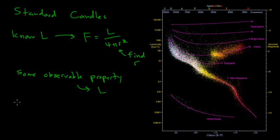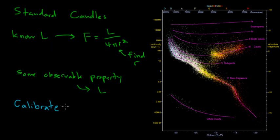Now, if I want to come up with a new set of standard candles — I have a bunch of objects that I believe are the same brightness — there are a number of things that I have to do before I can use it as a tool to measure distances. So the first thing that we have to do is actually calibrate how bright those objects are. I need to be able to say I can unambiguously and accurately measure the luminosity of all of these different objects. And most of the time, in order to do that, we're going to need quite a few nearby examples.